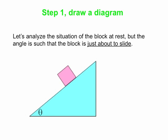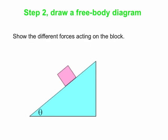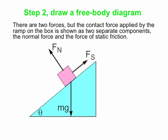Now we're going to draw a free body diagram of this box on the incline — showing the different forces that act on it. Really there are just two forces. There is the force of gravity that acts straight down; that is the interaction between the box and the earth, so the earth applies a downward force mg on the box. And then the ramp exerts a contact force on the box.